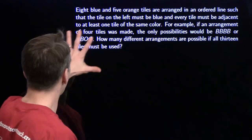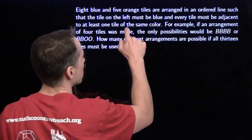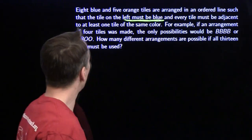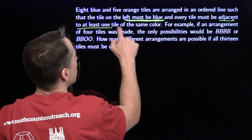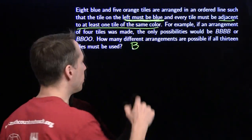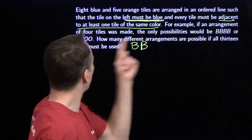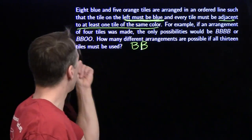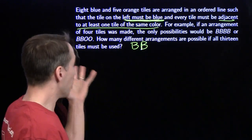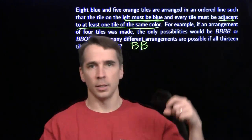Next problem has a lot of words, so we've got to read carefully. Eight blue and five orange tiles are arranged in an ordered line such that the tile on the left must be blue — I'm going to underline that so we don't forget it. Always underline those key things you might miss. Every tile must be adjacent to at least one tile of the same color. They give us an example with four tiles: you could have four blues in a row or two blues and two oranges. We want to figure out how many different arrangements are possible, and the goal is to count everything once and only once.